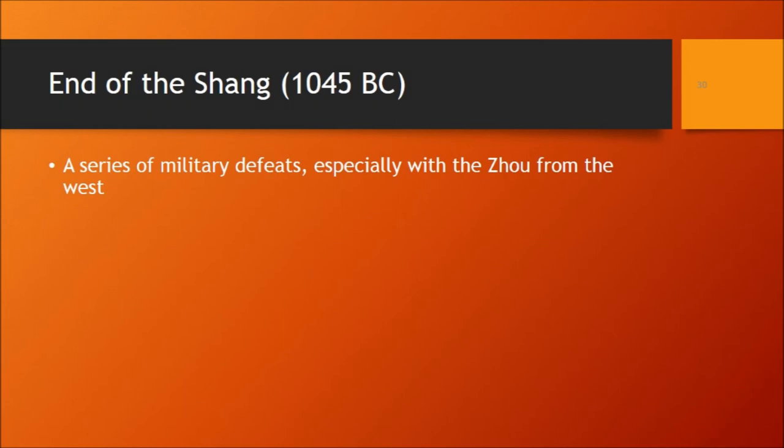The last thing we'll talk about regarding the Shang is their end. All dynasties and civilizations come to an end. The Shang were defeated around 1045 BC, or around 1000 BC, by another group of Chinese people called the Zhou, who were coming from the north and west and moving eastward. To learn about the Zhou, the Qin, and the Han, look at the slides up on Blackboard and do the exercises there.